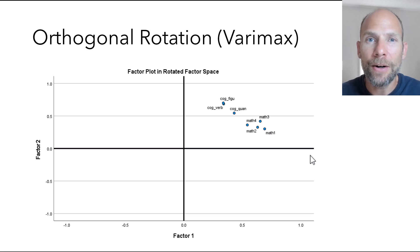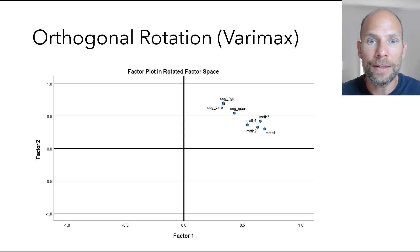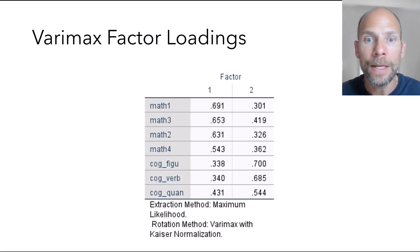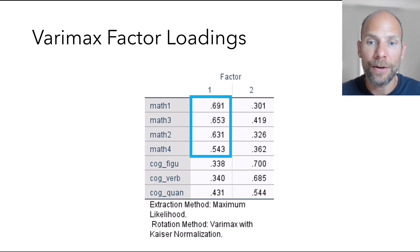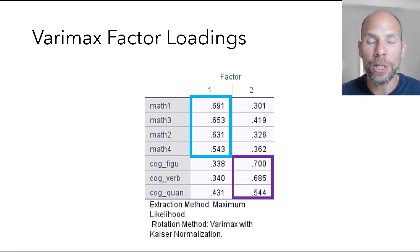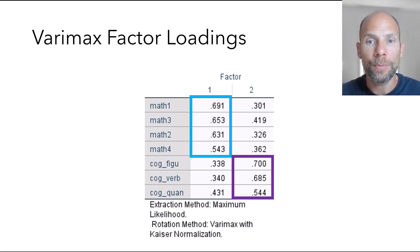This becomes clearer when we look at the actual numbers in terms of the rotated factor loadings. In the factor loading matrix for a varimax orthogonal rotation, the math variables have high loadings on factor one, whereas the cognitive test variables have high loadings on factor two. So now we have a relatively clear separation — factor one could be interpreted as a math factor, whereas factor two could be interpreted as a cognitive ability factor more broadly.